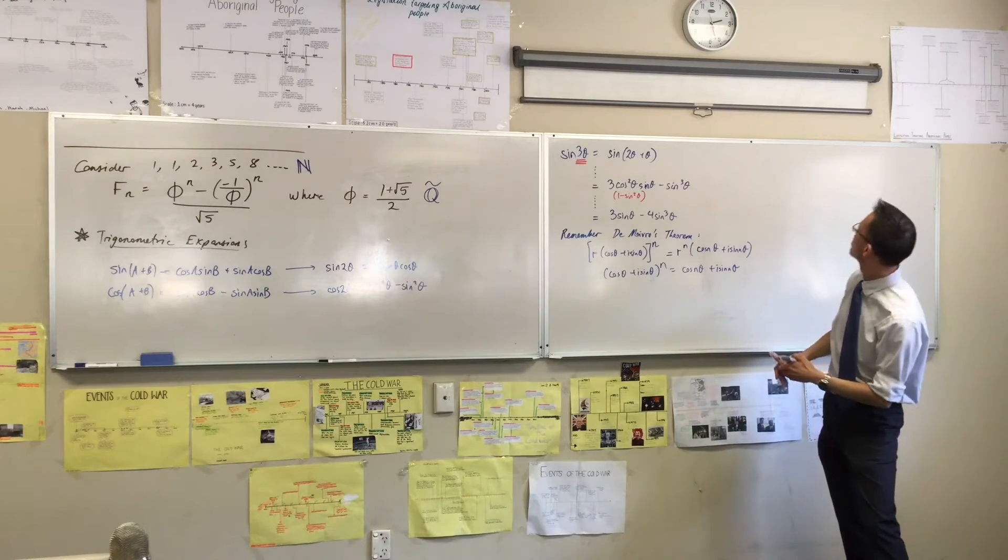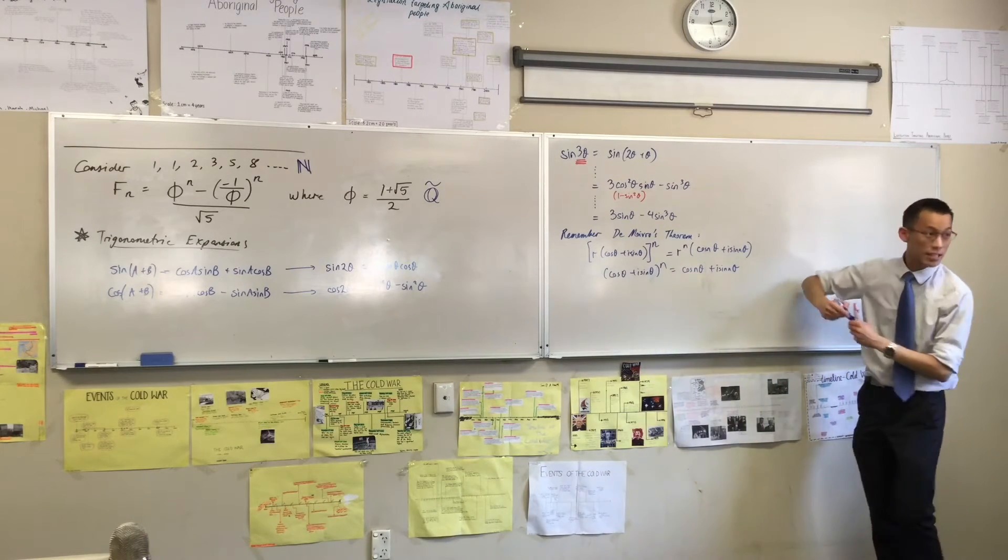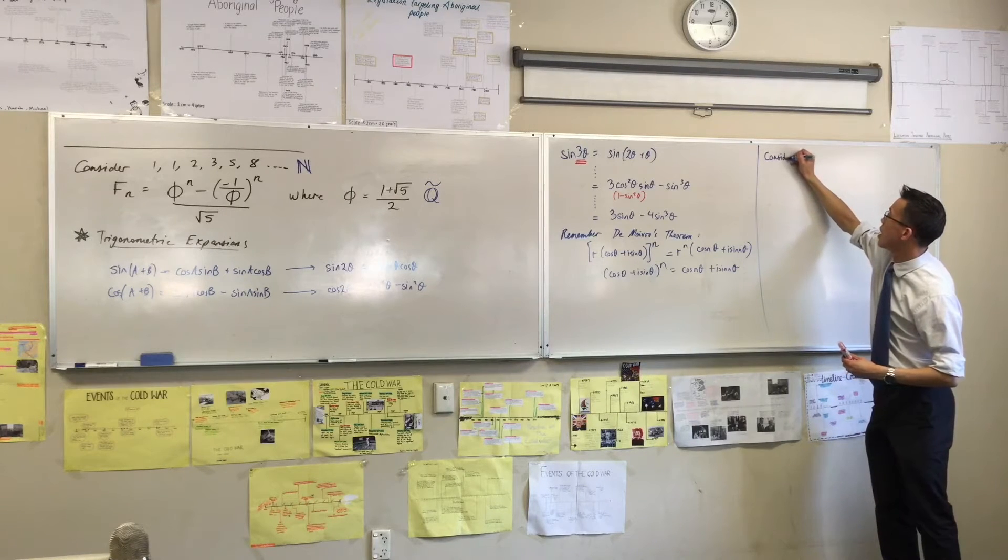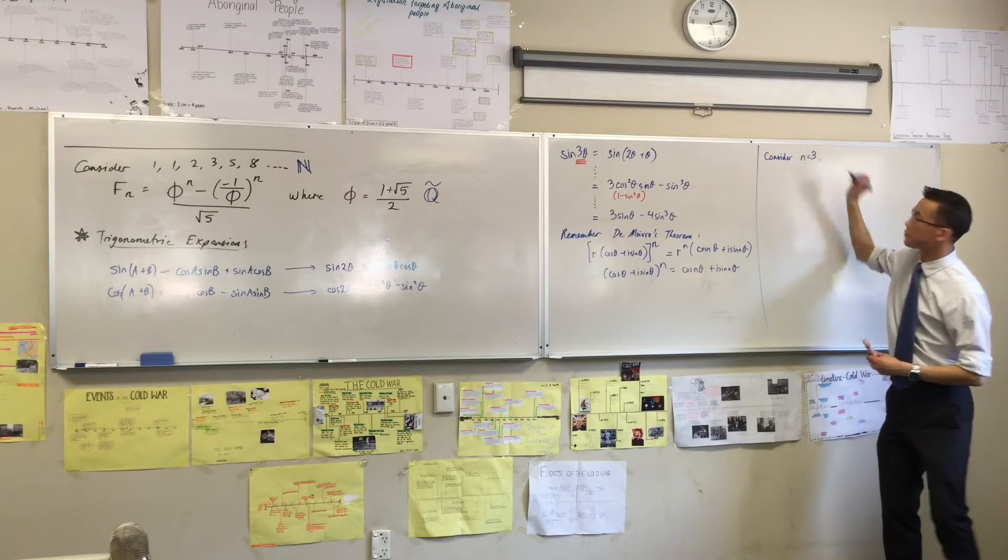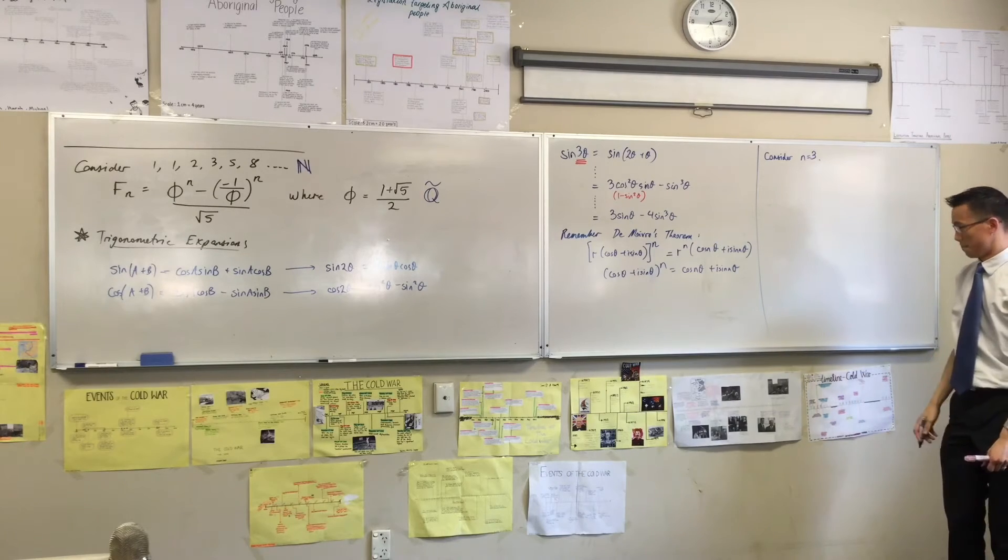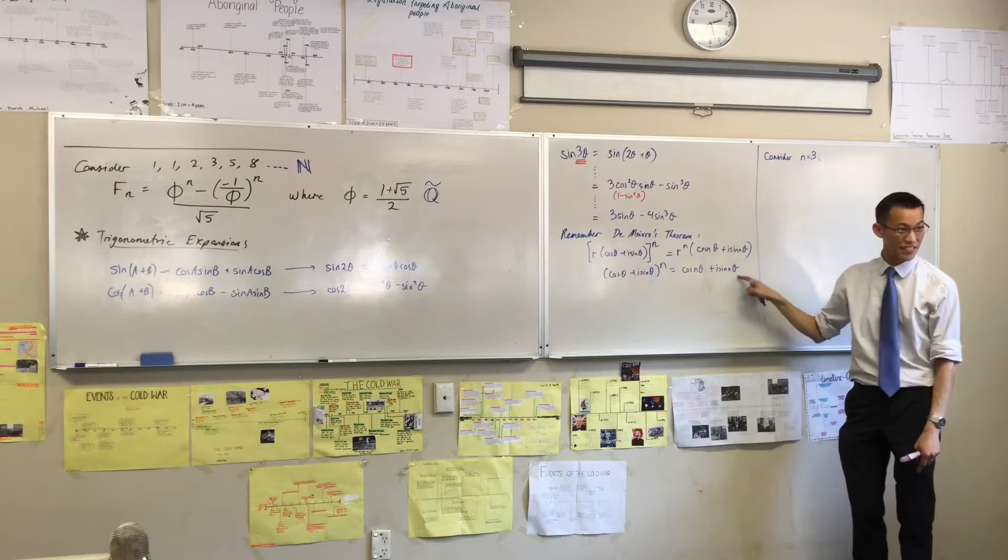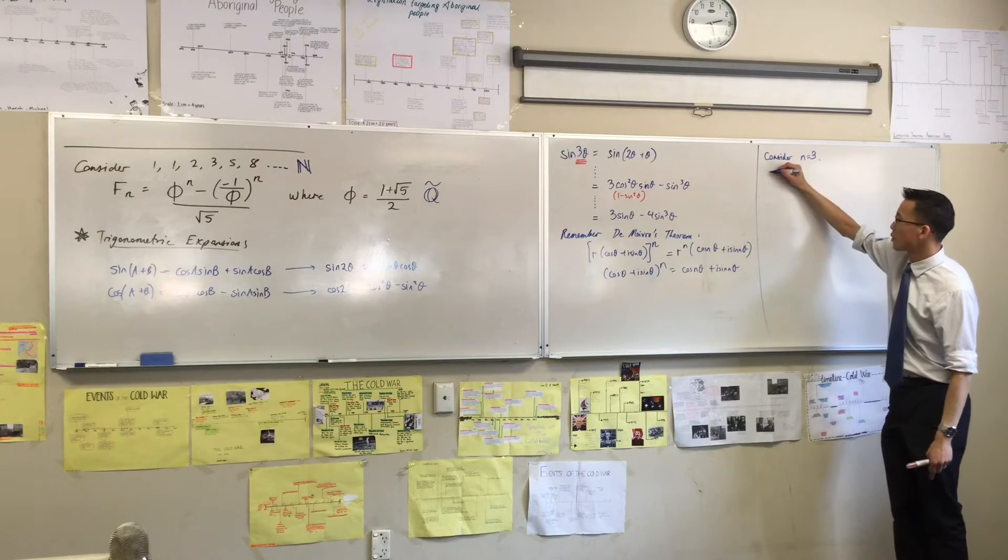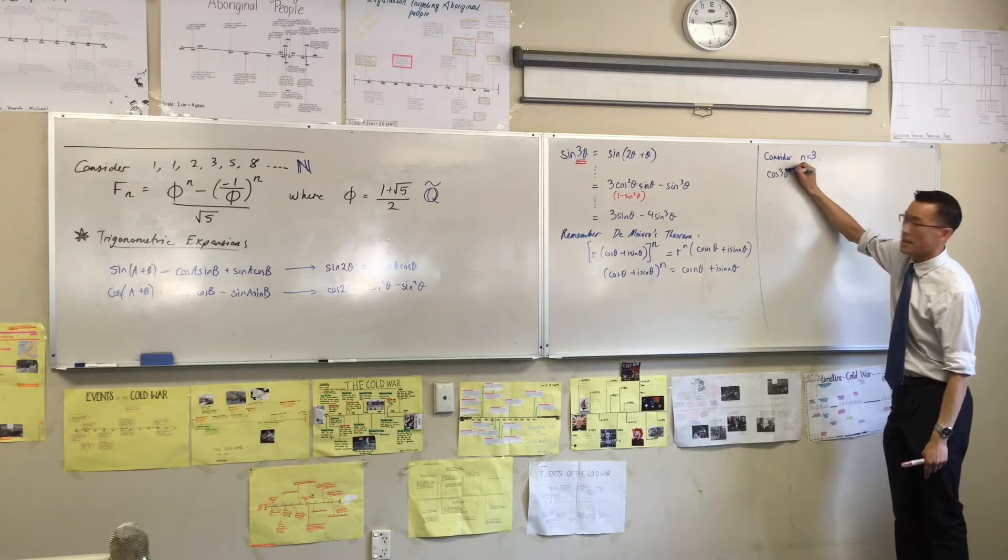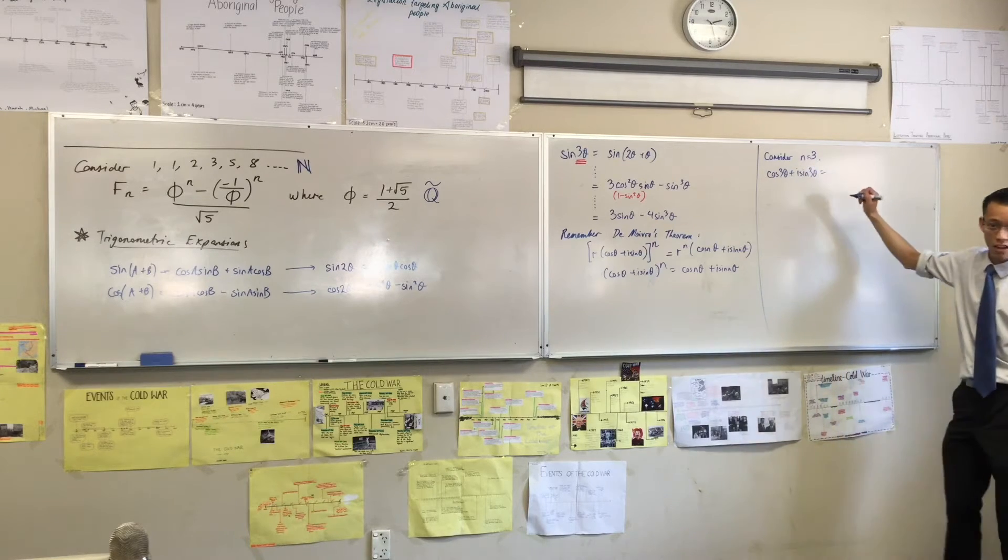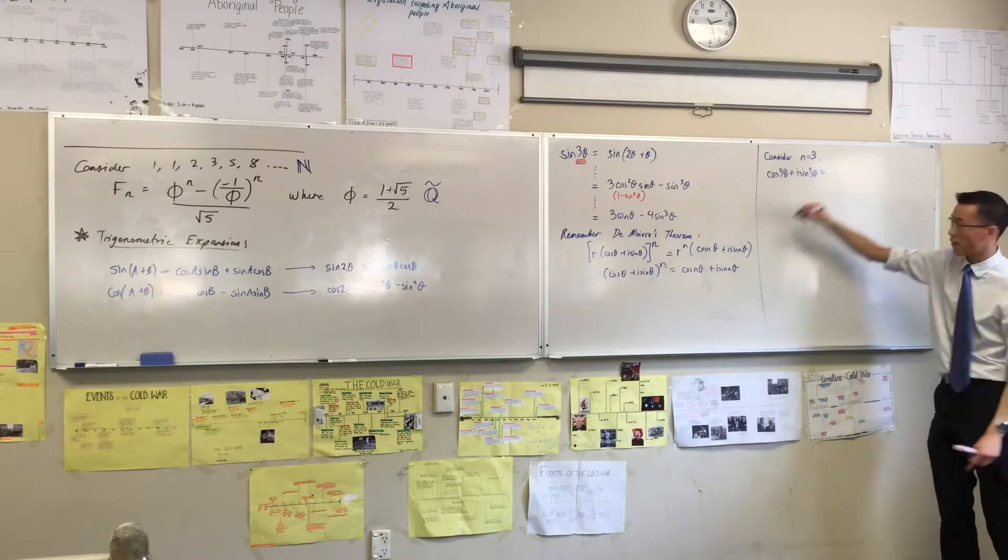So let's consider, I'm going to just put it in over here, let's consider n equals 3. Now for reasons that will become clear in a minute, I'm going to write this guy over here on the left hand side instead of the right hand side. So I'm going to go cos 3 theta plus i sine 3 theta is going to be equal to that guy on the left hand side.